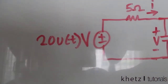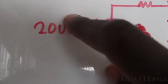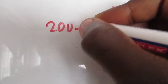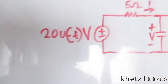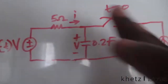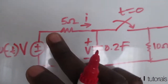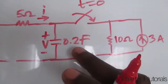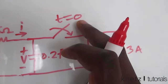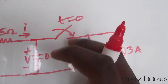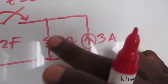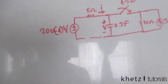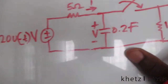The circuit is given with a source of 20·u(-t) volts. We have a 5-ohm resistor, a 0.2-farad capacitor, and a switch that is closed at time zero. There is also a 10-ohm resistor and a 3-ampere current source on the right side of the circuit.